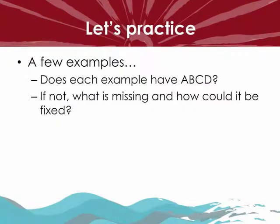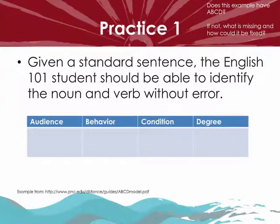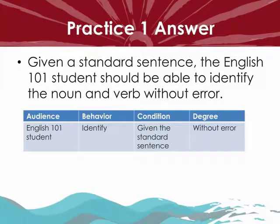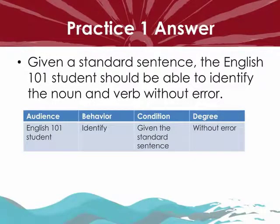Let's do some practice. Practice 1: 'Given a standard sentence, the English 101 student should be able to identify the noun and verb without error.' Does this have A, B, C, and D? The answer: Audience is 'English 101 student,' Behavior is 'to identify,' Condition is 'given a standard sentence,' and Degree is 'without error.' This objective contains all four components.